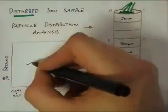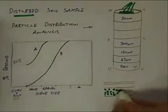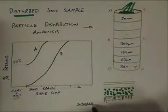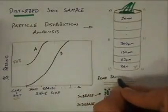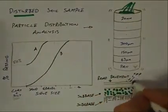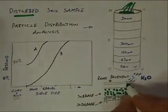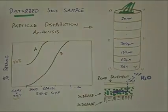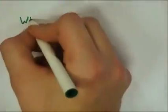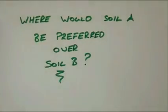For example, Soil A has 50% clay-sized particles and as a result is unlikely to provide the necessary free-draining properties required for its use as a sub-base material in a roadway. Soil B, on the other hand, has no clay-sized particles and is likely to allow any penetrating surface water to quickly drain away from the road pavement. It will also act as a capillary break between the pavement and subgrade. Can you think of a construction project where Soil A would be preferred over Soil B, and explain why?